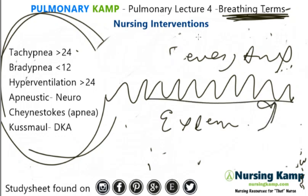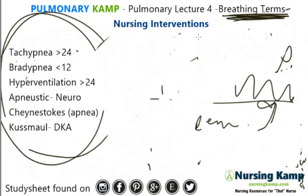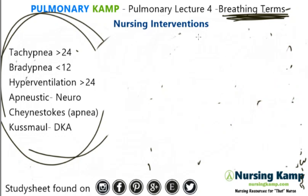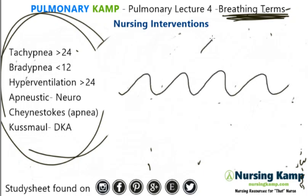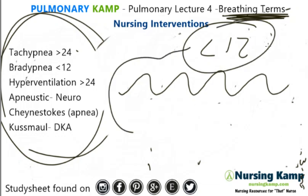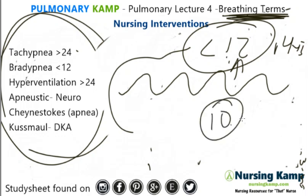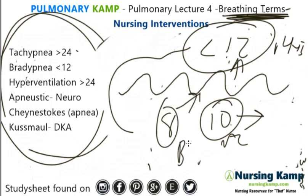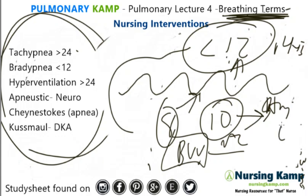The next one is bradypnea. Bradypnea is a respiratory rate that is regular but slow, usually less than 12. The body when relaxed is generally around 14 to 15, but at 12 we start to worry. Less than 12 is really concerning because at 10 the patient starts to become acute, and as we said, 8 is intubate — you should be bag-valve-masking that patient, staying with them, continually assessing, placing them on high-flow oxygen, monitoring vital signs, pulse ox, and level of consciousness.